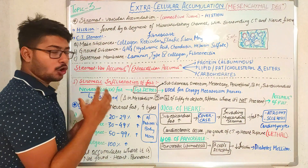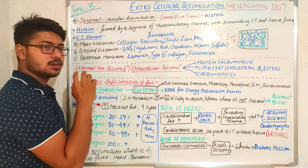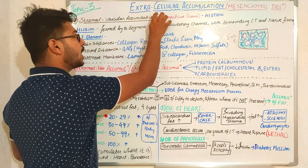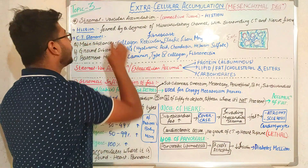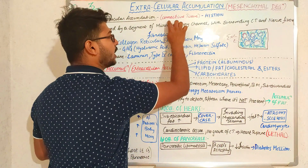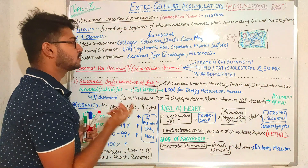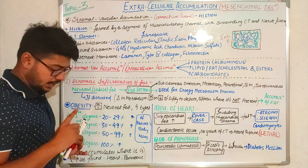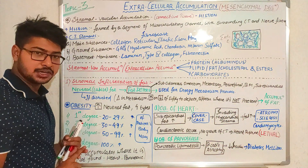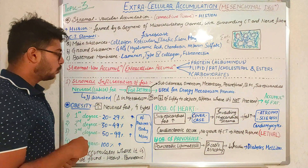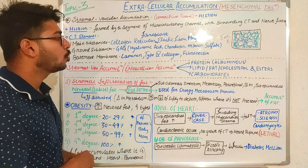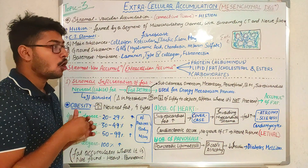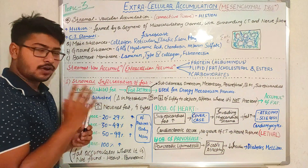Stromal means the organ or tissue consists of stroma in which cells are present, and vascular means our arteries and vessels. Extracellular accumulations are mainly formed in organs or tissue around the cells. The extracellular accumulation is divided into three types: protein accumulation, lipids/fats/cholesterol accumulation, and carbohydrate accumulation. We will also learn about diseases and types of cell injury related to these.